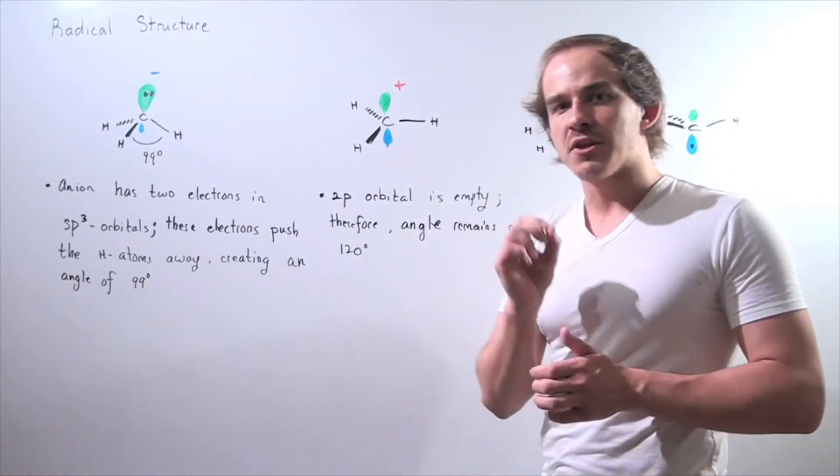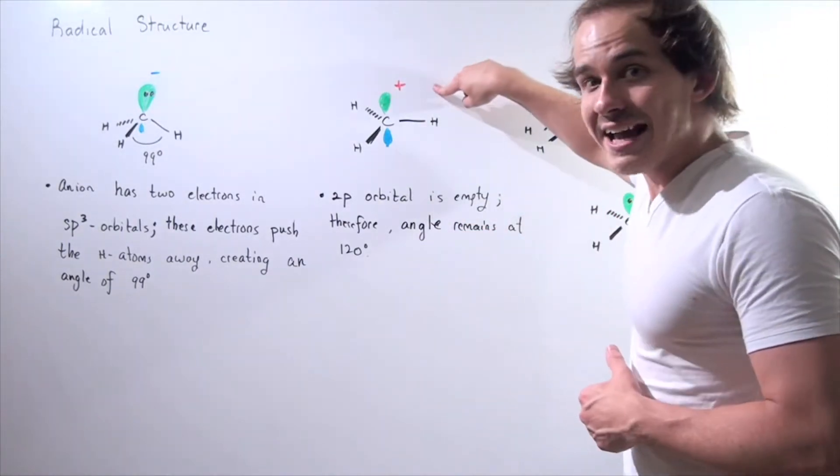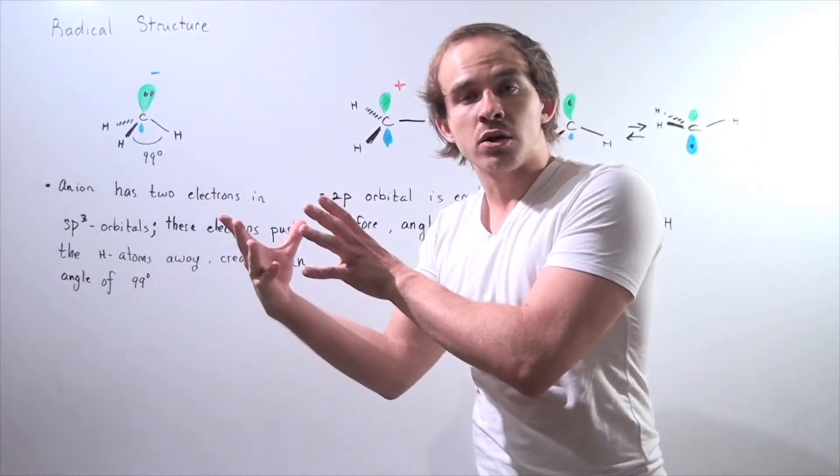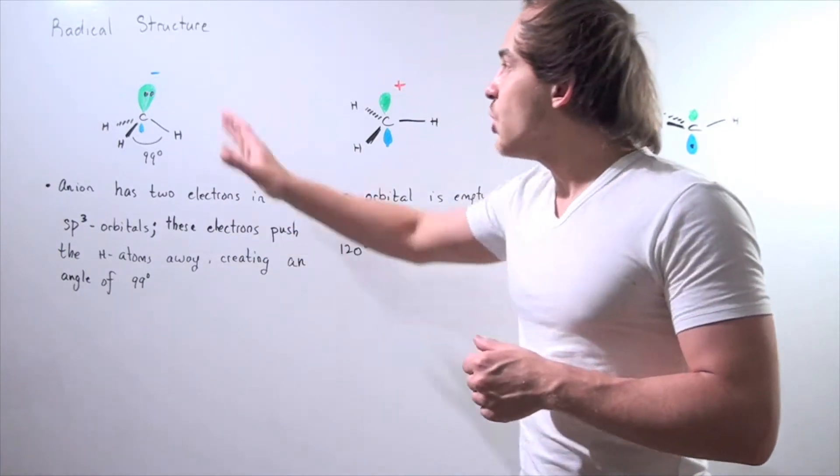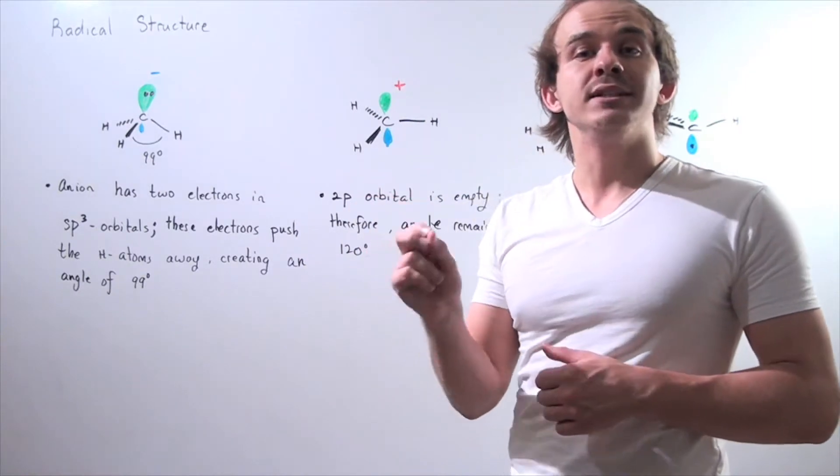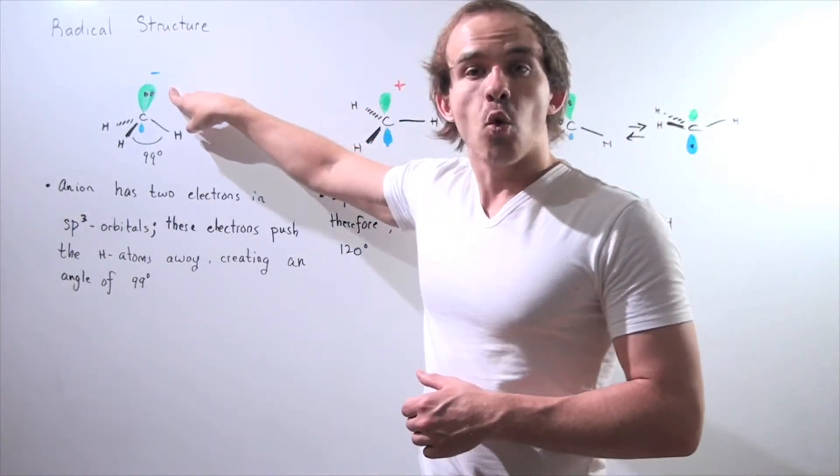Before we look at the structure of the methyl radical, let's examine the structure of the methyl cation and the methyl anion, and compare them to the methyl radical. Notice that the anion has two electrons, a pair of non-bonding electrons, in the sp3 hybridized orbital.